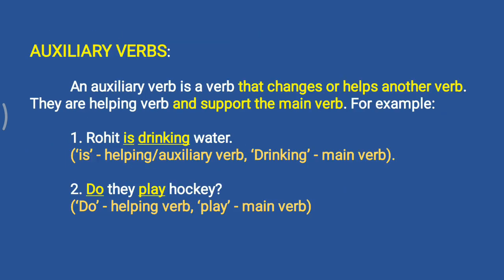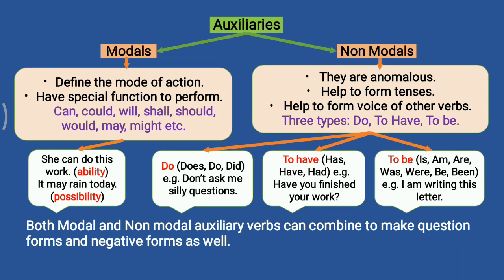Now our next type is auxiliary verbs. An auxiliary verb is a verb that changes or helps another verb; they are helping verbs that support the main verb. For example: 'Rohit is drinking water' — here 'is' is the helping or auxiliary verb and 'drinking' is the main verb. In the next example: 'Do they play hockey?' — here 'do' is the helping verb and 'play' is the main verb. Auxiliaries can be classified into two parts: modals and non-modals.